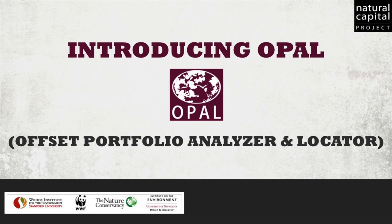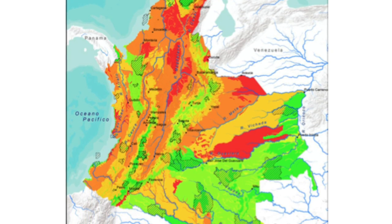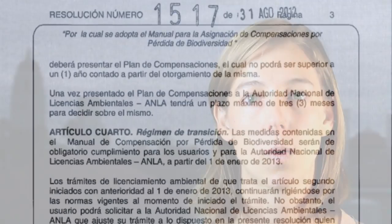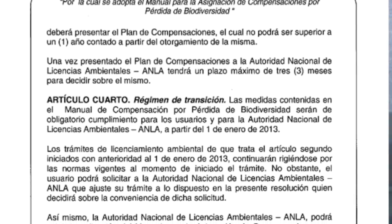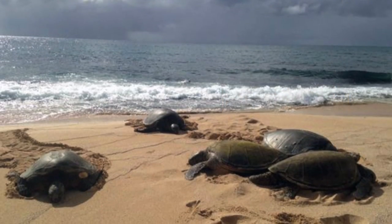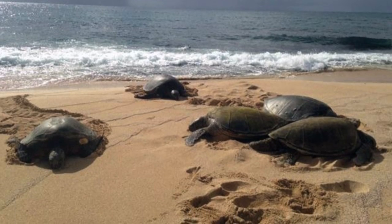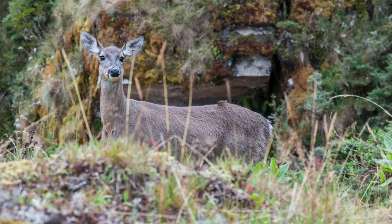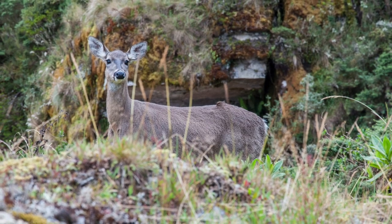OPAL actually grew out of work that we started in Colombia in Latin America. In 2012, Colombia passed a law that requires development projects account for their impacts to terrestrial biodiversity and then offset those losses through protection of natural ecosystems or restoration. They're in the process of adding requirements for marine and freshwater biodiversity as well as ecosystem services. The Nature Conservancy in Latin America and in Colombia led the development of the 2012 compensation policy and is continuing to lead development of the policy with the addition of freshwater, marine, and ecosystem services components.